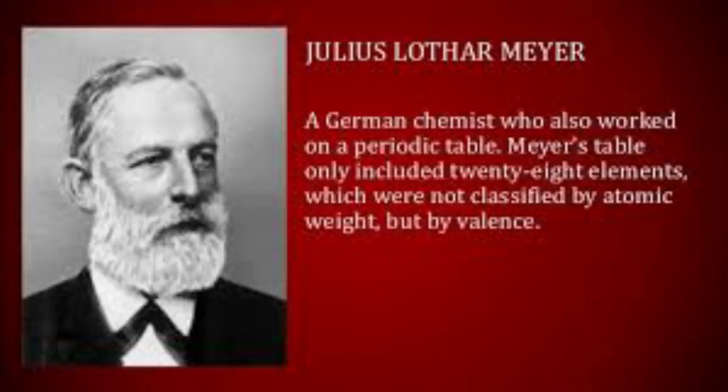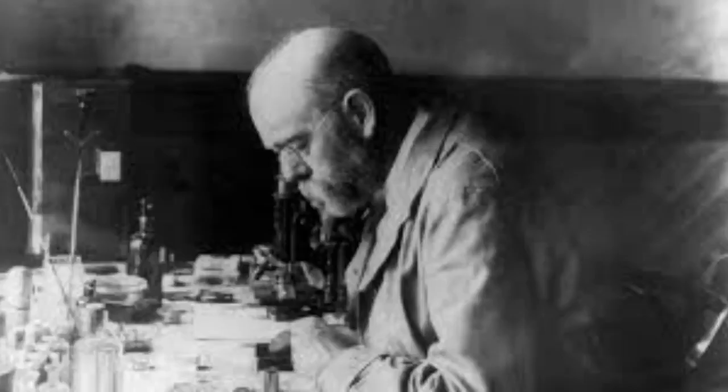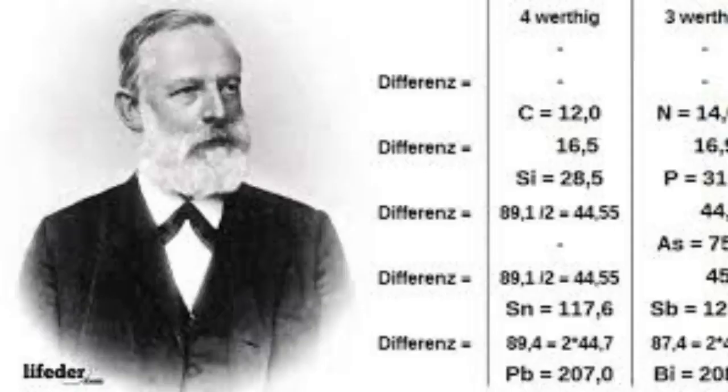A few months later, Meyer published a paper that included a revised version of his 1864 table that now included virtually all of the known elements, which was similar to the table published by Mendeleev. Meyer had developed his fuller periodic table independently, but he acknowledged Mendeleev's priority. Included in Meyer's paper was a line chart of atomic volumes as a function of atomic weights, showing graphically the periodicity of the elements.